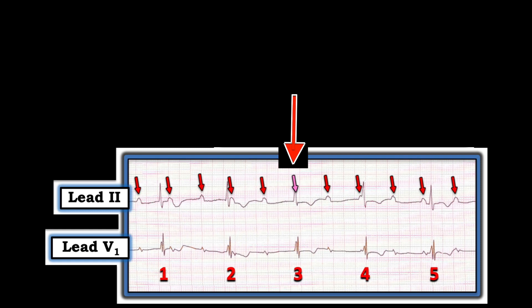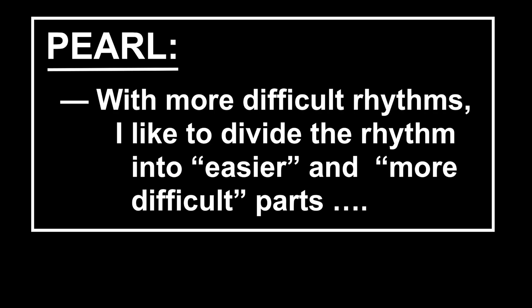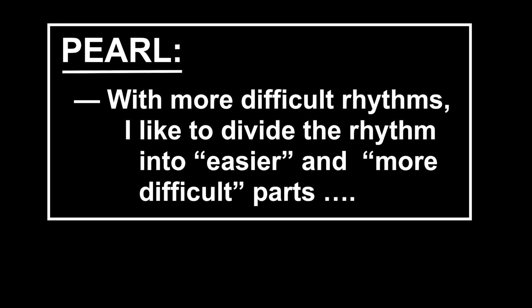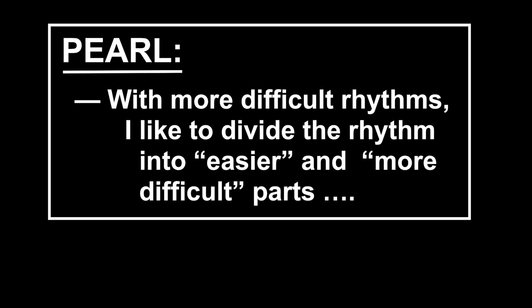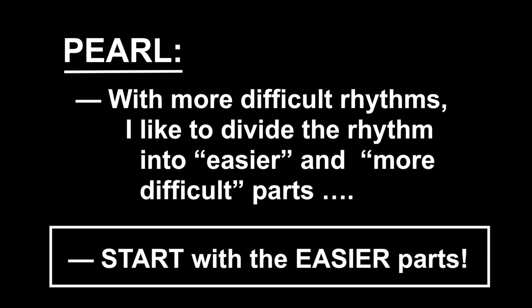Why did I use a pink arrow? Because it's hidden within the QRS. Am I 100% sure that there's a P wave in here? No — because the QRS is covering it. But this is an important concept. With difficult rhythms — and this is a challenging rhythm — I always divide the rhythm into easier parts and more difficult parts, and I like to start with the easier parts.